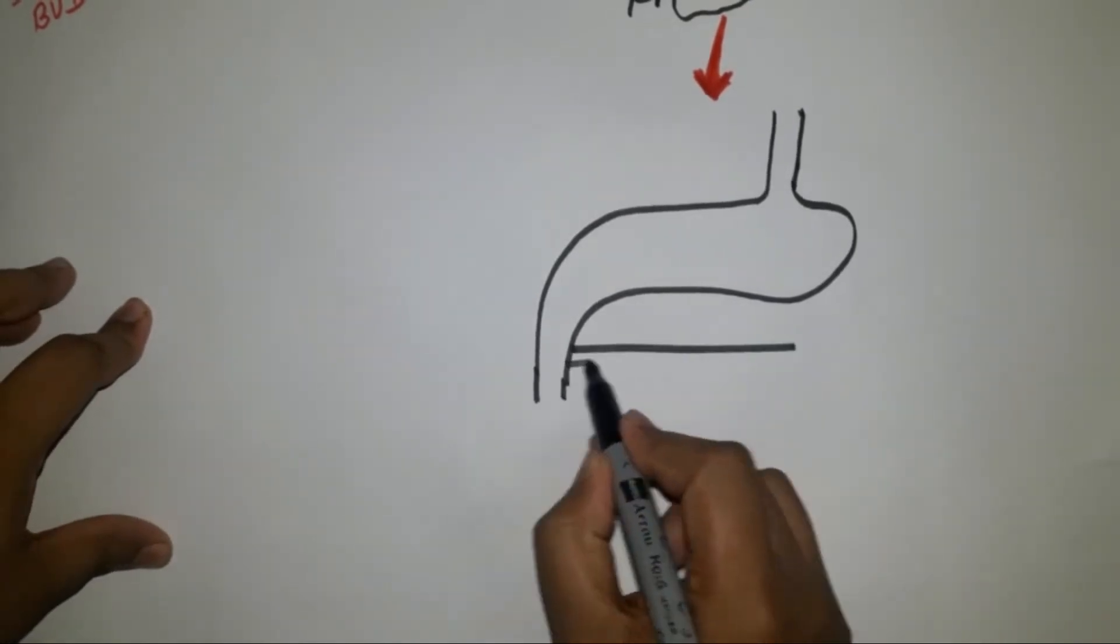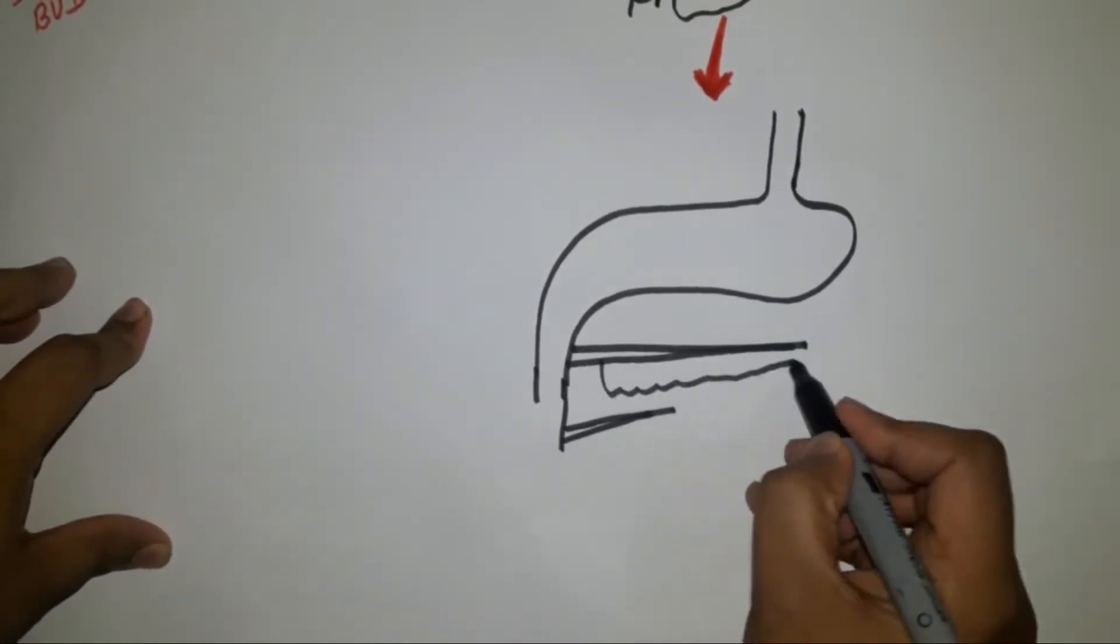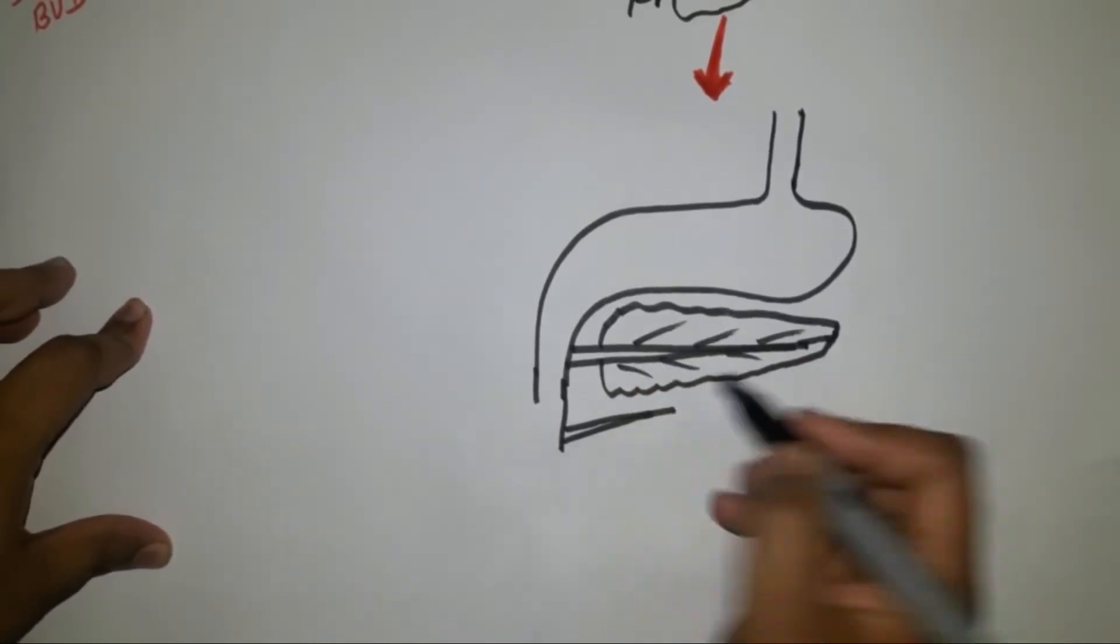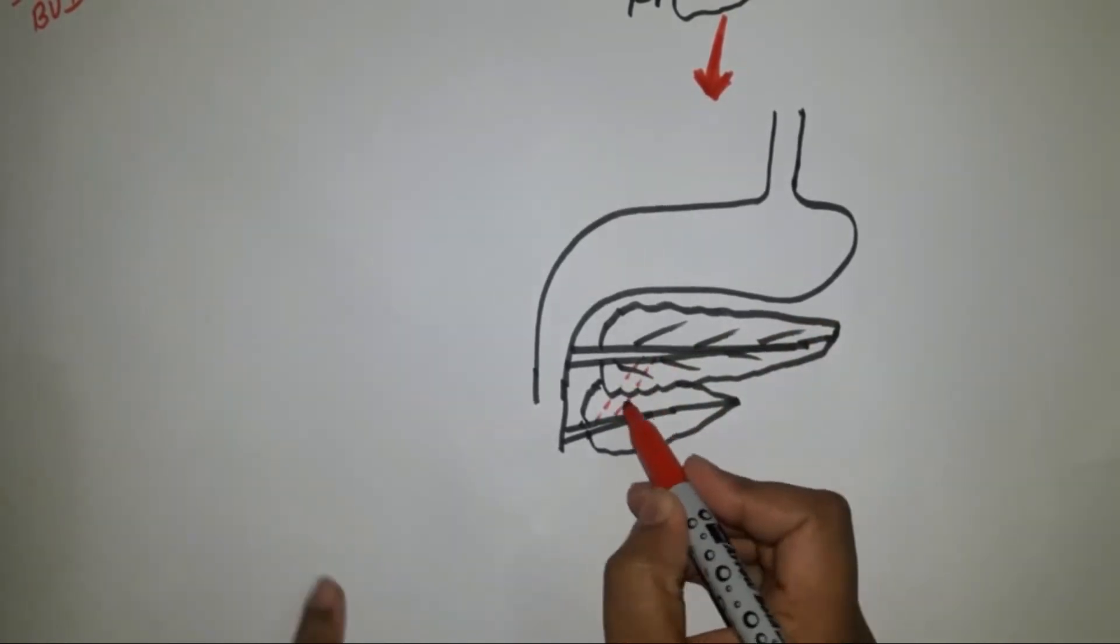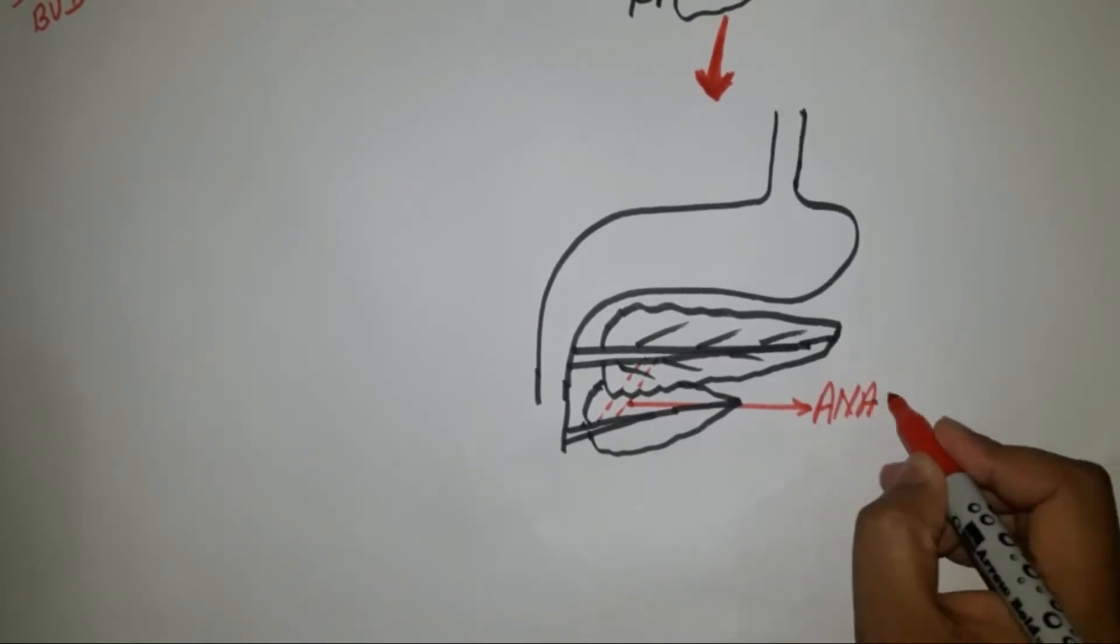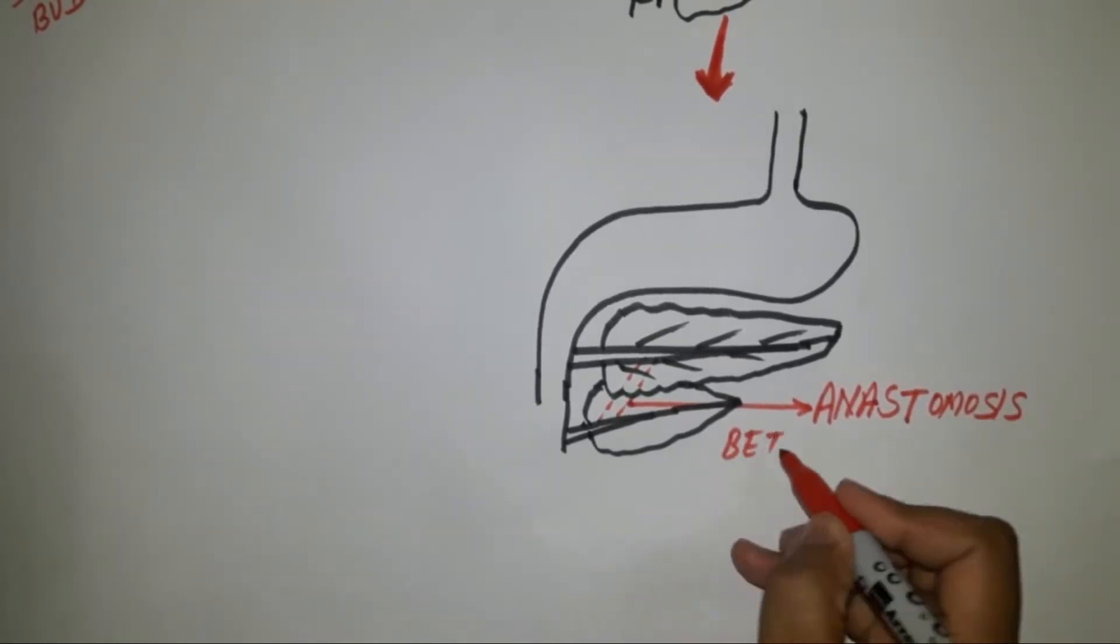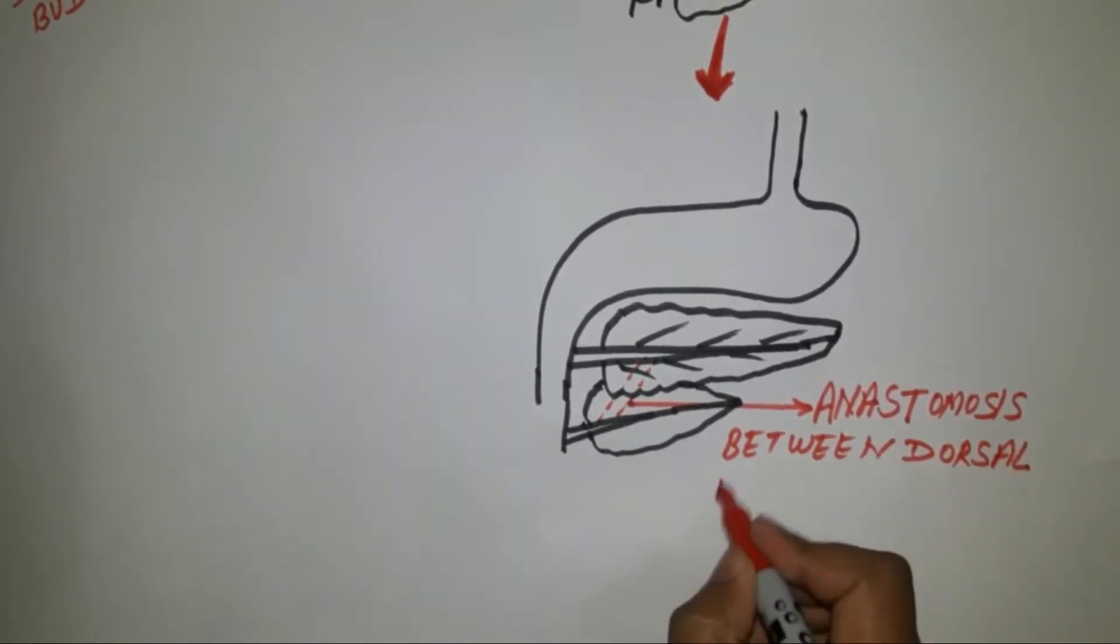The dorsal and ventral pancreatic buds grow in size and fuse with each other to form the pancreas. The dorsal pancreatic bud forms the upper part of head, neck, body and tail of the pancreas.